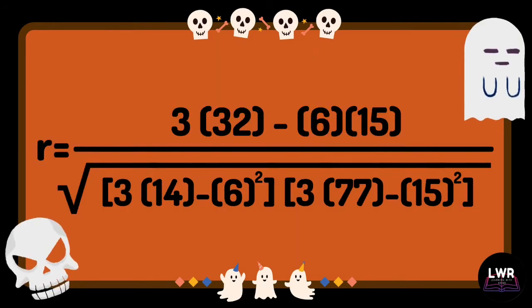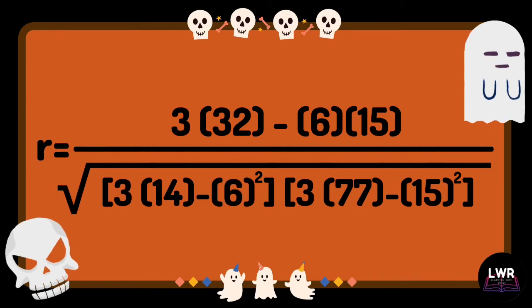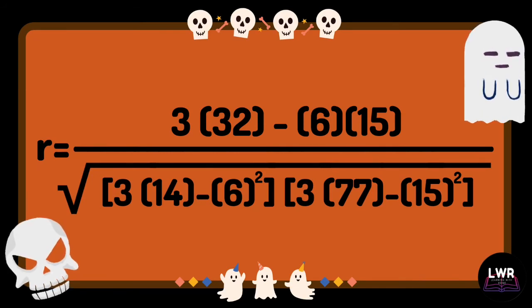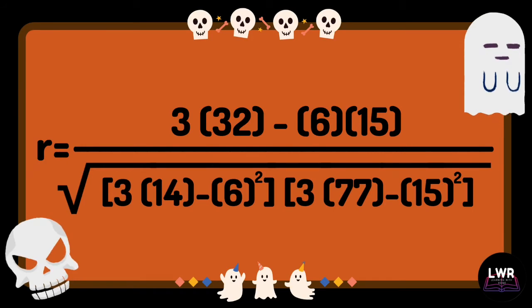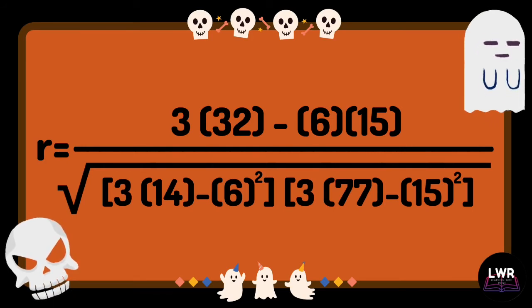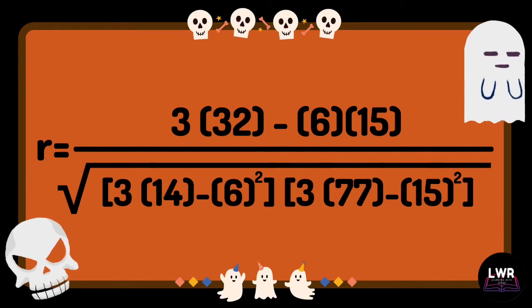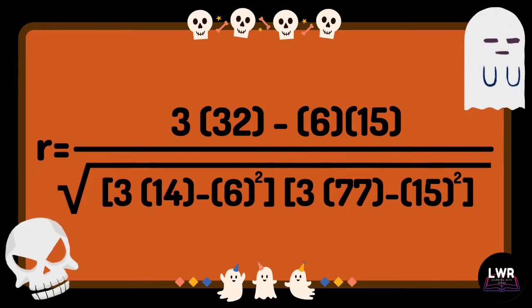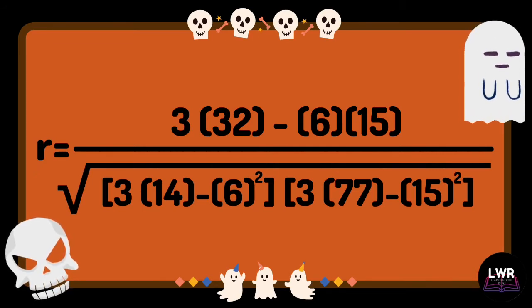So let us continue to substitute the values in the formula. r is equal to 3 times 32 minus 6 times 15, all over the square root of quantity 3 times 14 minus 6 raised to 2, times quantity 3 times 77 minus 15 raised to 2.